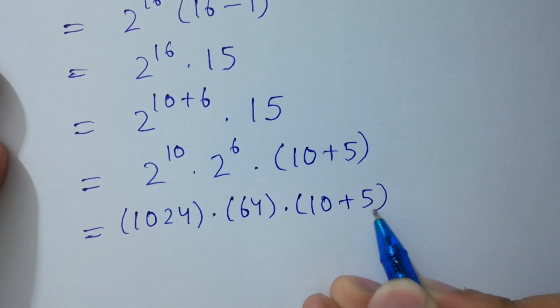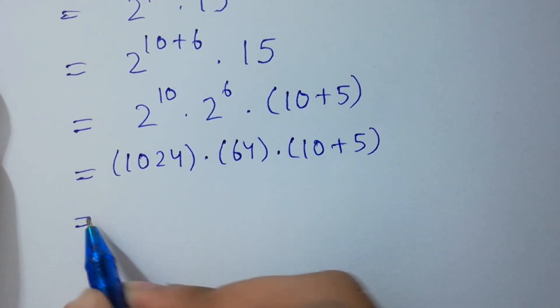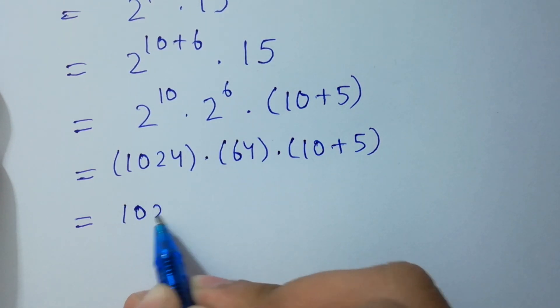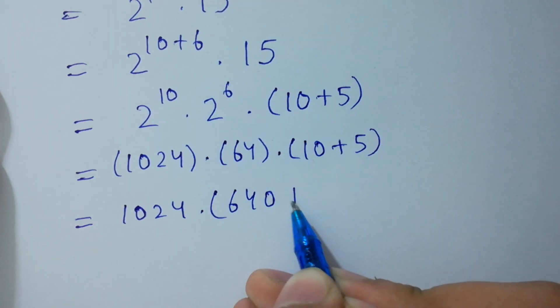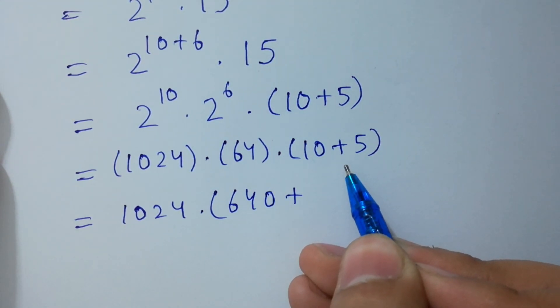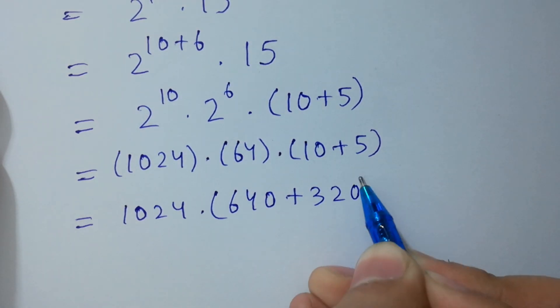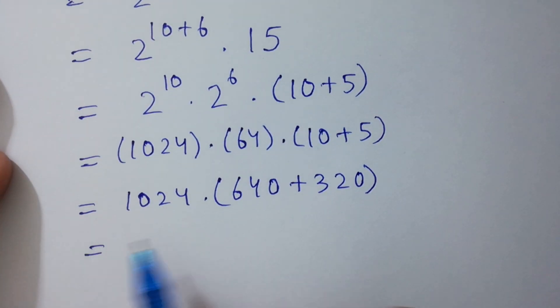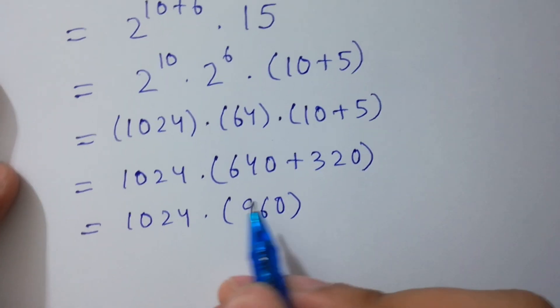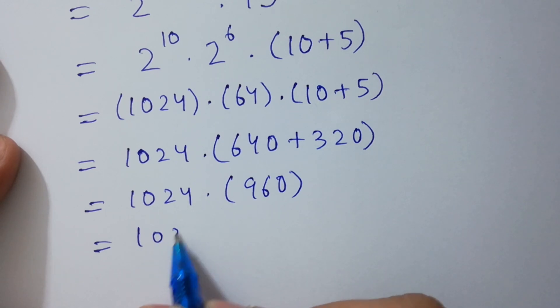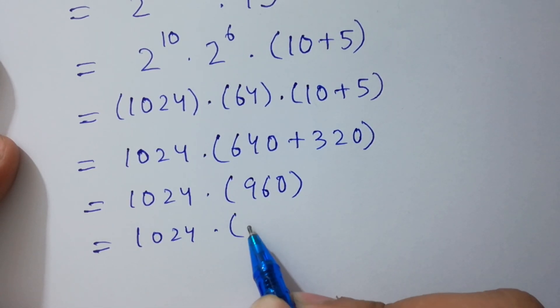Next step: 1024 as it is, and here 64 times 10 we get 640, plus 64 times 5—half of 64 is 320. Next step: 1024 as it is, 640 plus 320 equals 960.